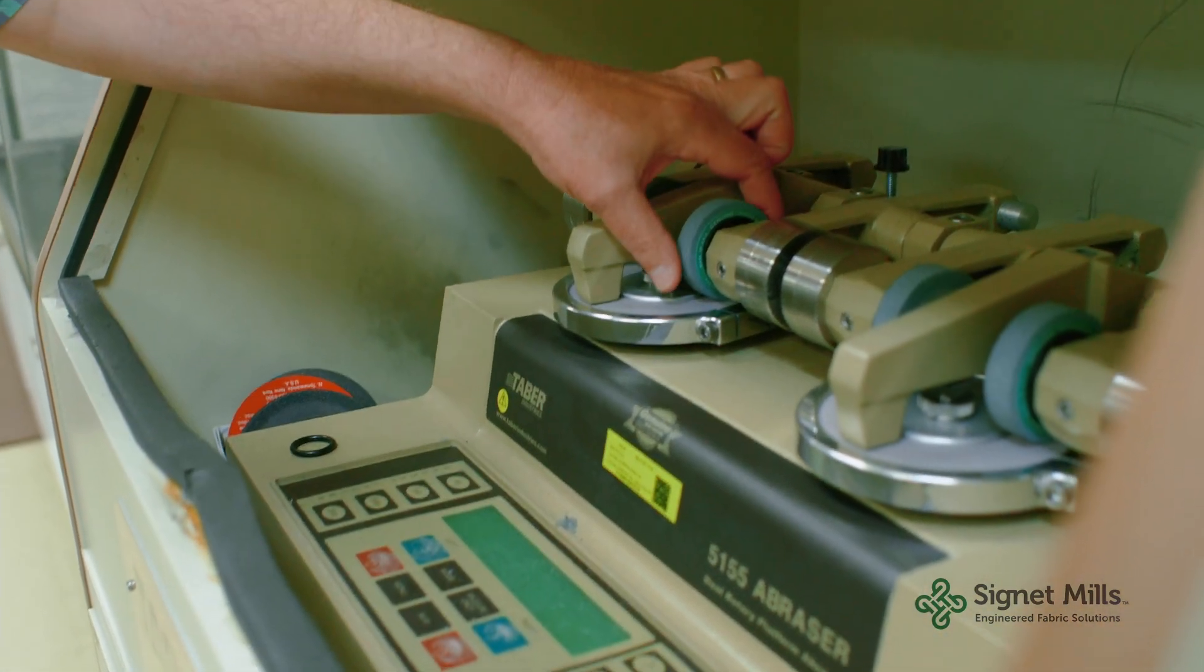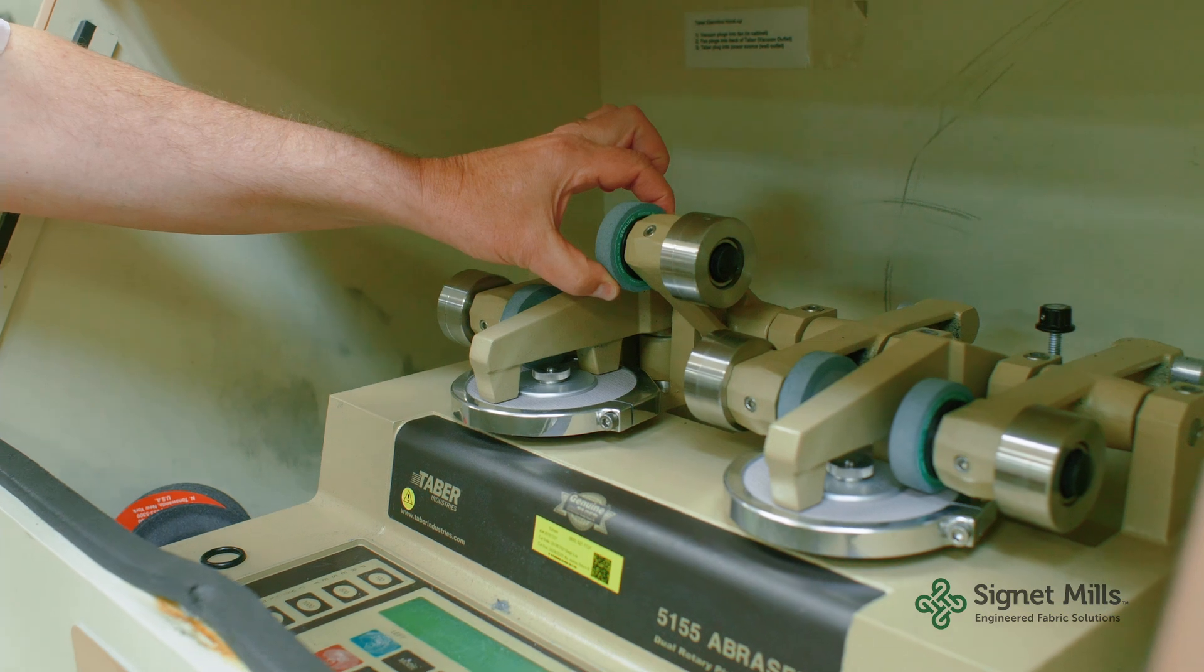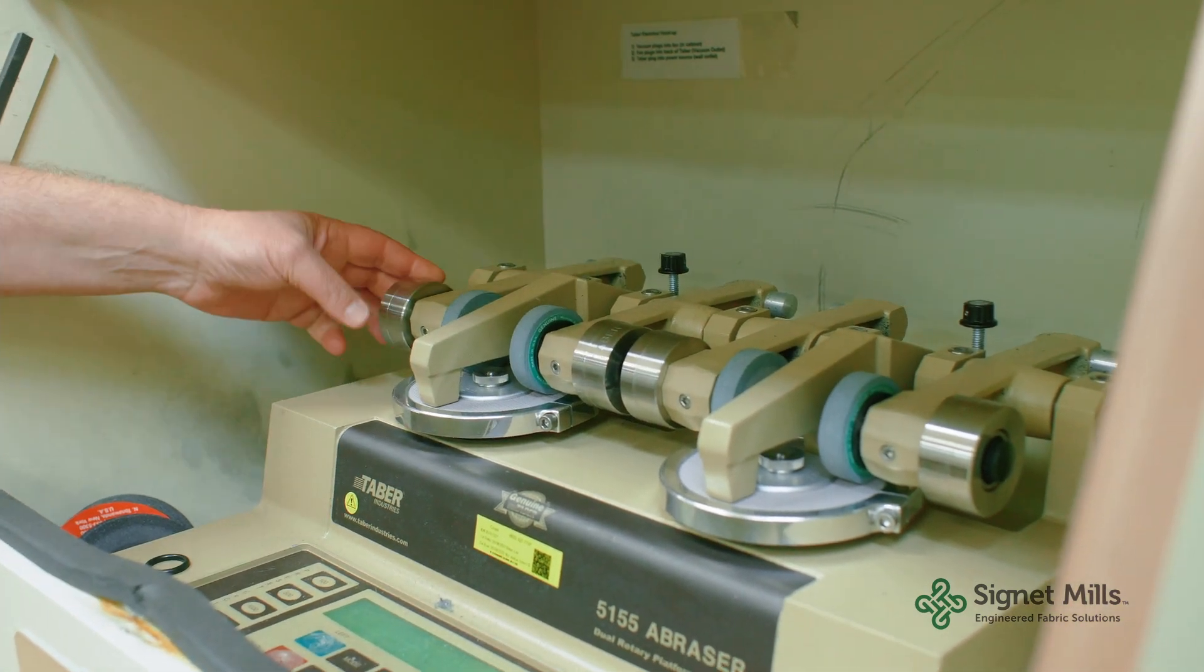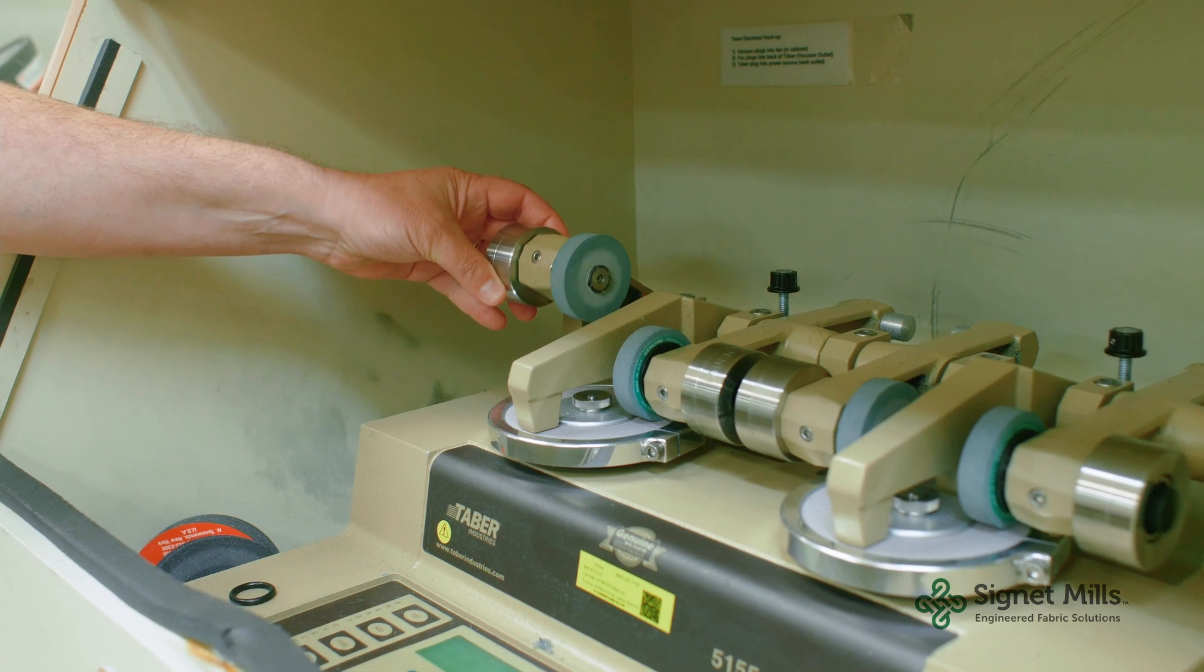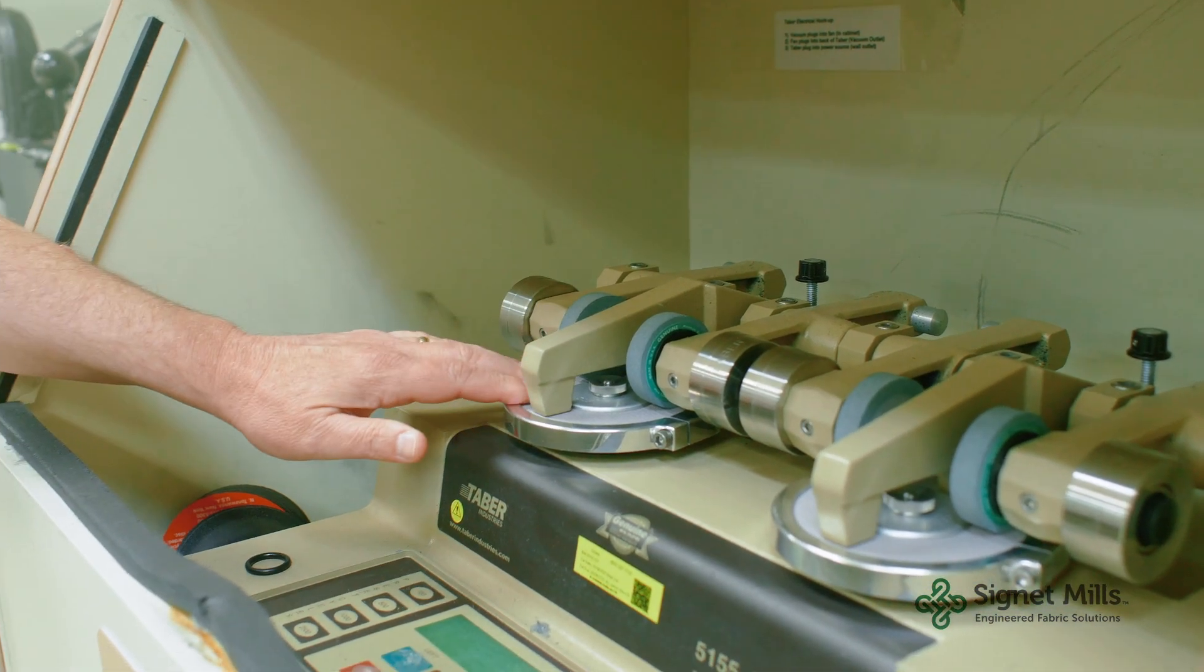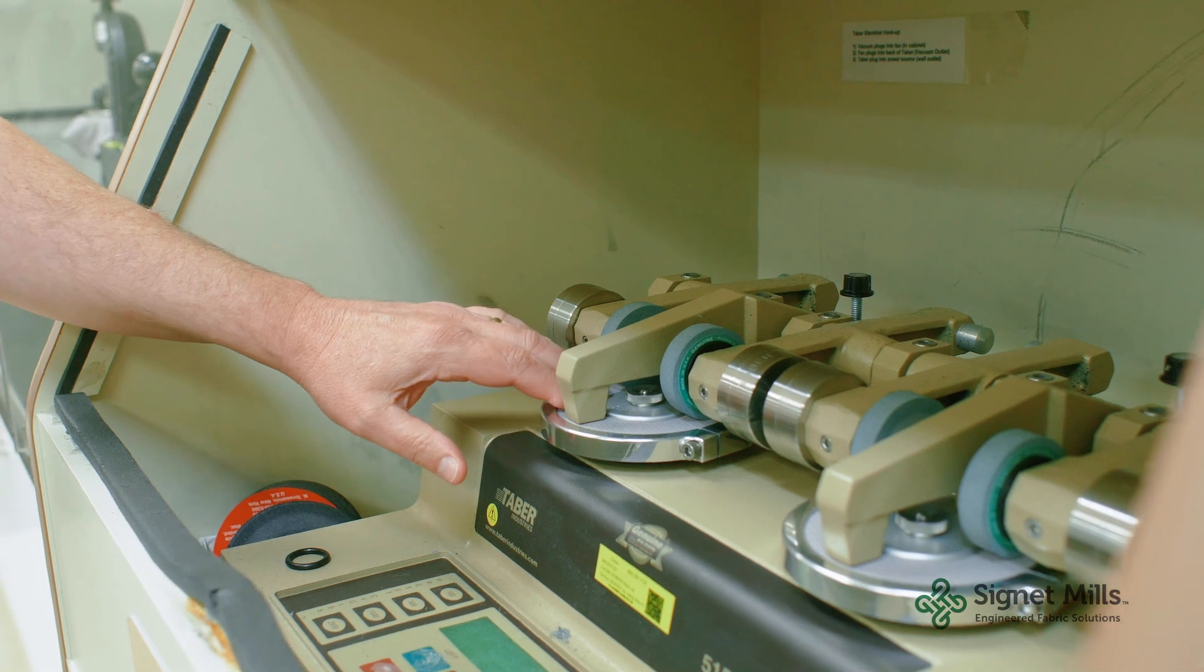You have this wheel here, which is your abradant. You have the weight, which is how much force that abradant is putting on the textile. And then you have the textile that you're testing here.